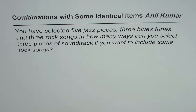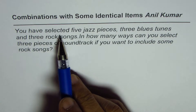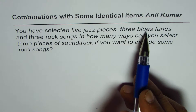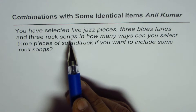I'm Al Kumar and here is a very good example on combinations where some items are alike and we do have a restrictive condition. The question is: you have selected five jazz pieces, three blues, and three rock songs.